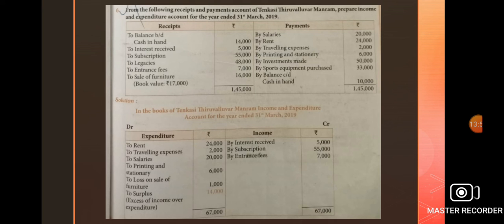Question number 6: from the following receipts and payments account of a club, prepare income and expenditure account. For questions 1, 2, and 5 we prepared receipts and payment accounts — identifying payment items on the credit side and receipt items on the debit side. But in this problem, a receipts and payment account is given, and from it we prepare the income and expenditure account.